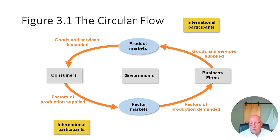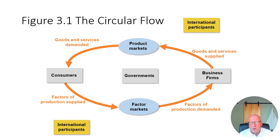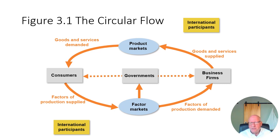Both parties are producing something that the other party needs — business firms cannot go it alone without consumers, and consumers cannot go it alone without business firms. Virtually everyone in the world, when given a chance, abandons their subsistence farm, moves to a city, and offers their labor for sale in a labor market. Governments also get involved in the factor markets. For example, a government-run elementary school has to hire workers and have schools built, so they purchase those factors in the factor market as well.